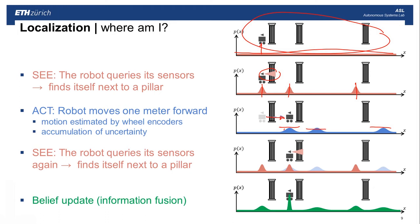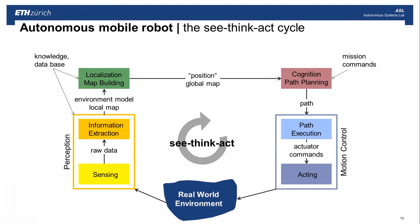At one point, the robot takes a second view of the environment and can again reason about where it is. Considering only what the robot currently sees, you have three peaks again. But if you combine this with the prior information shown in blue, there is a single clear, strong peak at one point. This represents the most probable position of the robot and can then be used for planning.